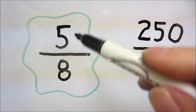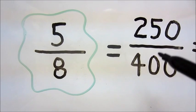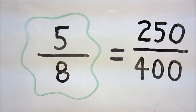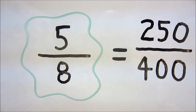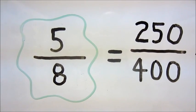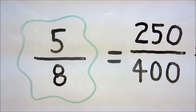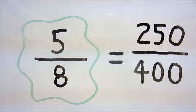So now we have 5 eighths equals 250 over 400. But remember we need a denominator of 100. So all we're going to do is reduce or simplify both numerator and denominator until we end up with a denominator of 100.